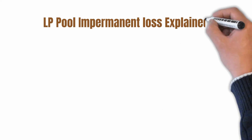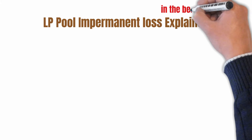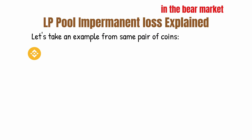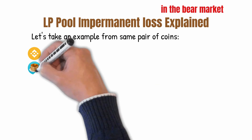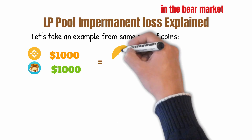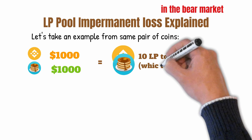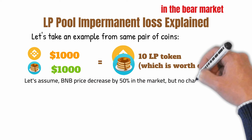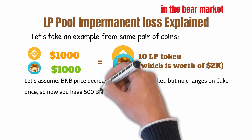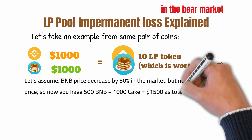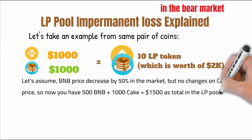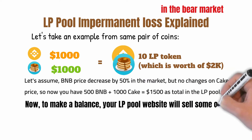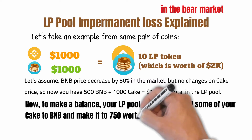Now let's talk about a different scenario — the bear market. The market is going down and you are providing liquidity. Let's take the same pair: BNB worth $1,000 and Cake token coin worth $1,000. Let's assume we are in the bear market and the BNB price decreases by 50% but there are no changes in the Cake price. So now you have $500 BNB plus $1,000 Cake, totaling $1,500 in the liquidity pool. To make a balance, your LP pool website will sell some Cake for BNB, resulting in $750 worth of BNB and $750 worth of Cake.